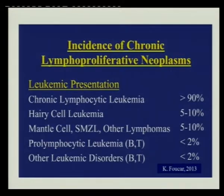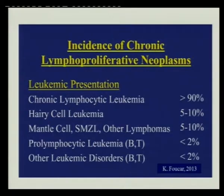The immunophenotype is very critical in identifying and segregating these conditions; without it, it's nearly impossible, as there's a lot of morphological overlap. As for incidence, CLL is the commonest. In the West, CLL is of course the commonest, but in Saudi Arabia and other Middle Eastern countries we don't have real figures, though it's supposedly not as common.